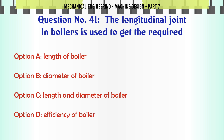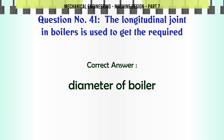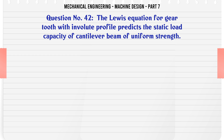The longitudinal joint in boilers is used to get the required: a) length of boiler, b) diameter of boiler, c) length and diameter of boiler, d) efficiency of boiler. The correct answer is: diameter of boiler.